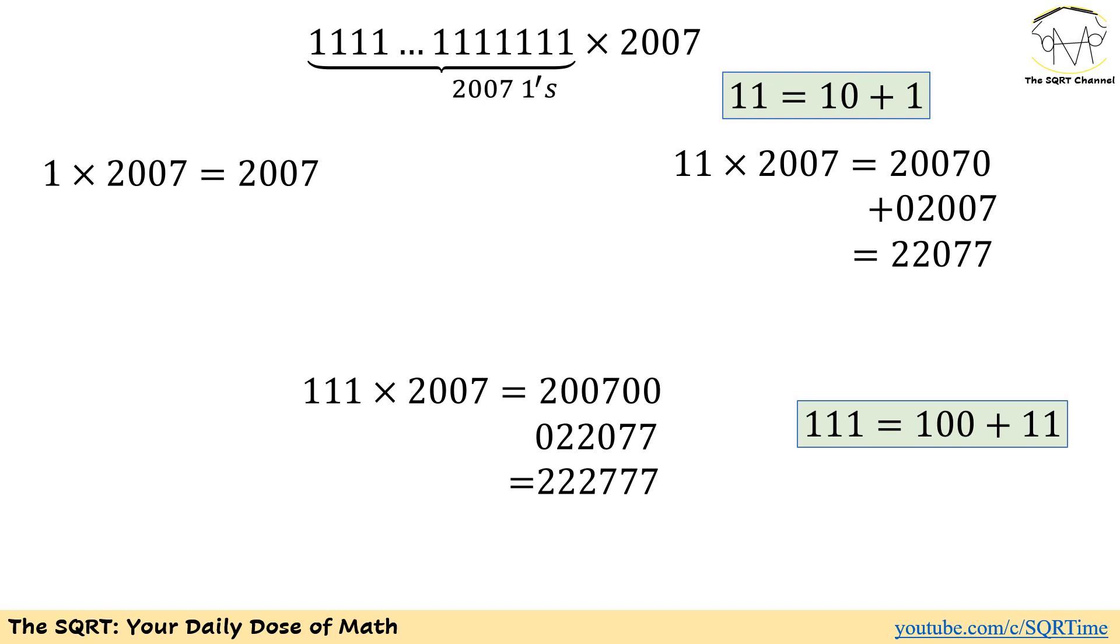Instead of having 11, we write it as 10 plus 1, and then we multiply 10 plus 1 by 2007. It's going to be addition of two numbers. The first one is 10 times 2007, which gives us 20070 on the left, and then we add 2007 to this number. It's going to be 22077.